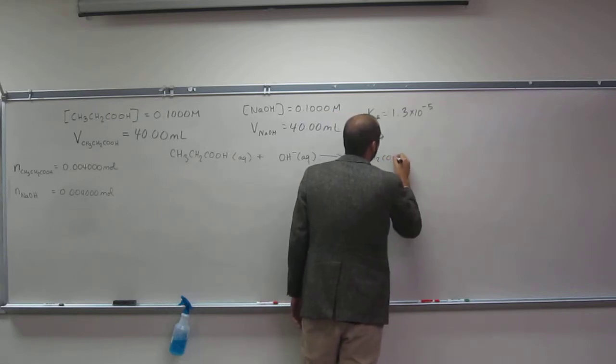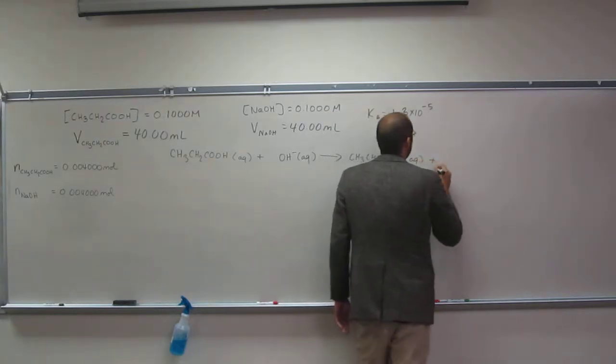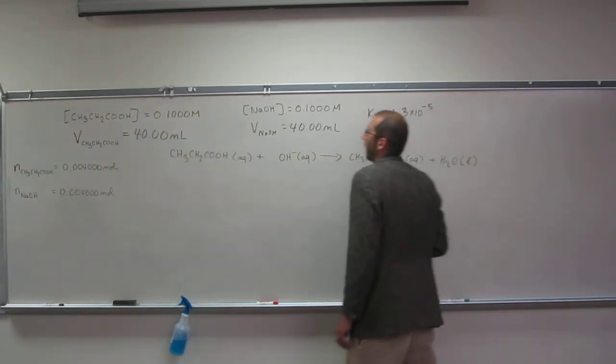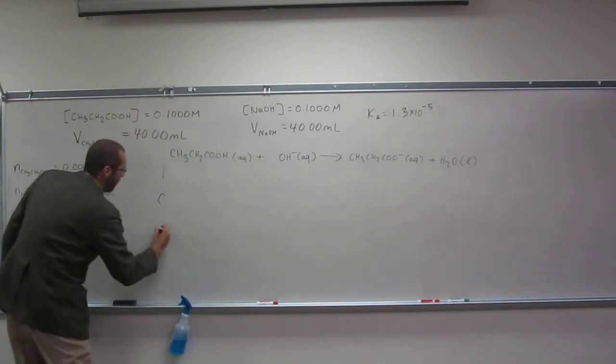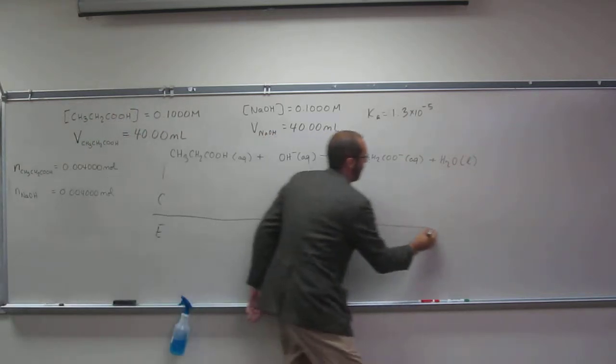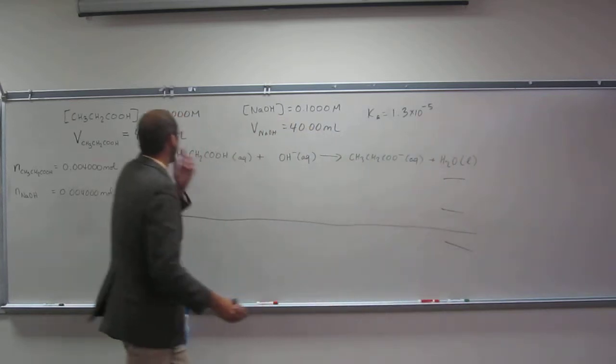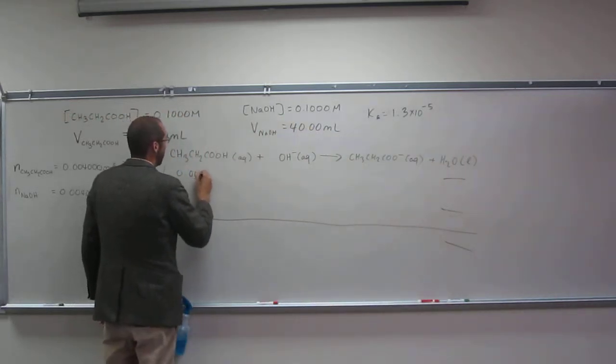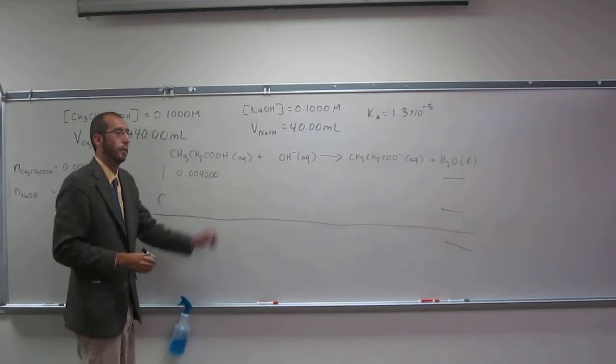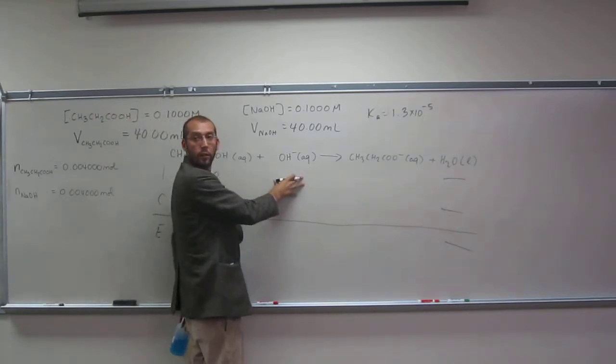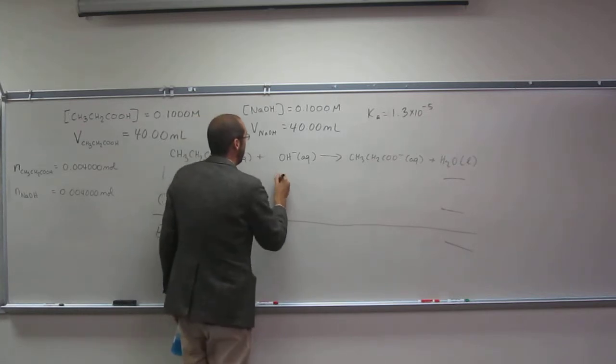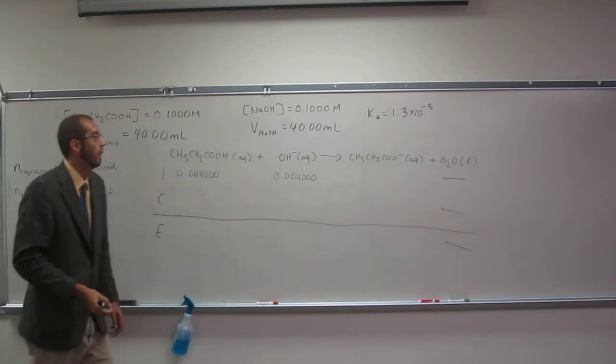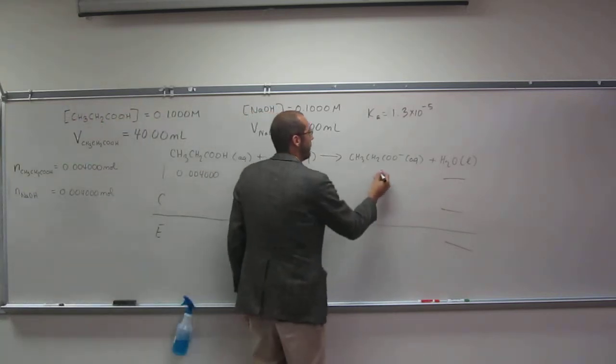So here, we're going to make CH3CH2COO minus aqueous plus H2O. So I, C, E. What do we get here? 0.00400. Here, what is it? 0.00400, right? So the same thing. Here it's what? Zero. Here it's what? Zero.